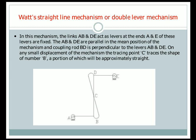When link AB moves, it is connected with links BD and DE. As it moves, link BD traces a small displacement in the shape of the number 8, a portion of which is approximately straight. This is how this mechanism works. By changing the fixed points in a 4-bar mechanism, we can obtain different inversions of the 4-bar mechanism.